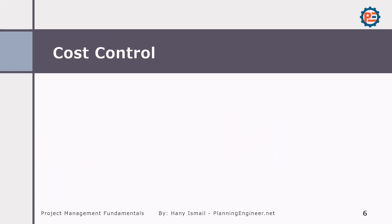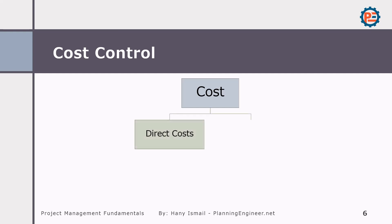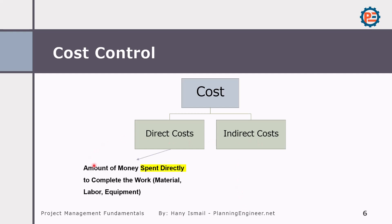When we say cost, we have two types: direct costs and indirect costs. Direct cost is the amount of money spent directly to complete the work — like material, labor, equipment, any direct costs related to the activity.